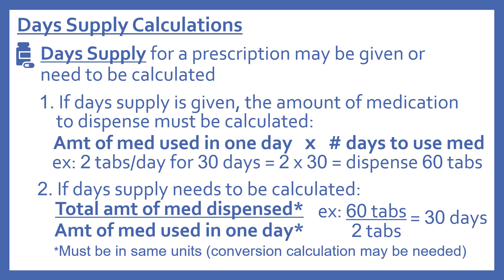For example, if you have 60 tablets as the total amount of medication dispensed and the amount of medication used in one day was two tablets, you would divide 60 by 2 and that would give you 30 days.